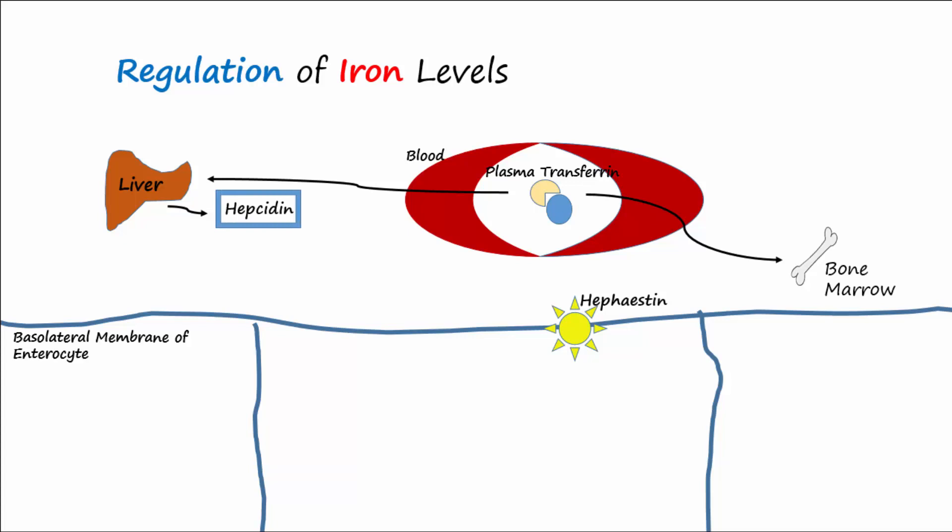Hepcidin's main action is to prevent the absorption of iron into the blood from the duodenum.